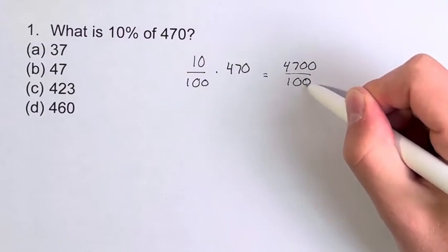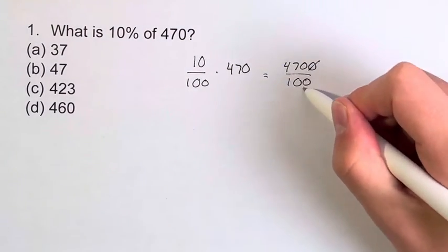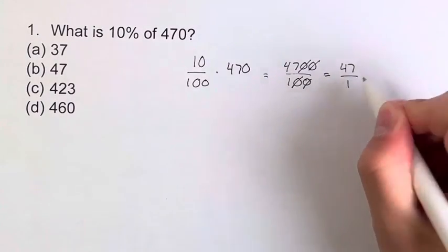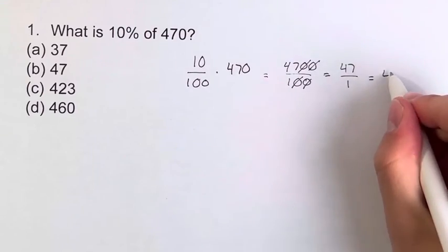And whenever you have zeros on top and bottom you can cancel them out. So these cancel out and these cancel out. And this leaves us with 47 divided by 1 which is of course 47.